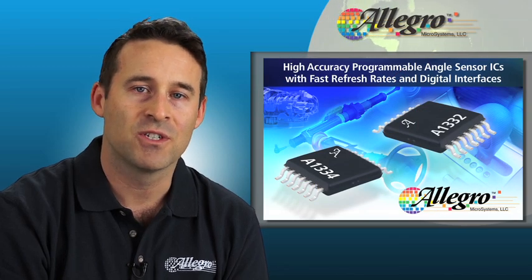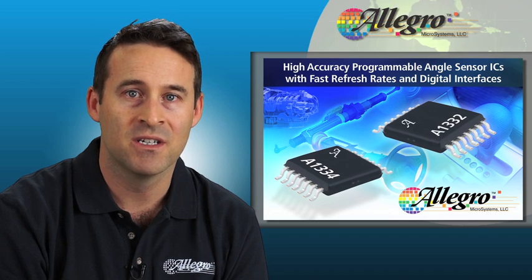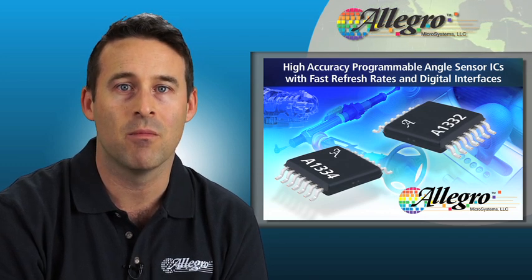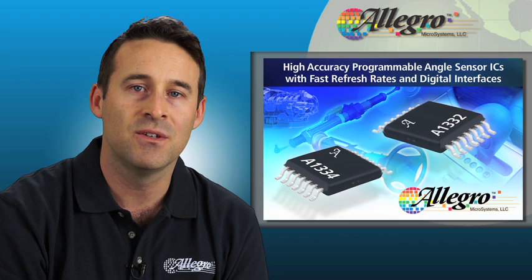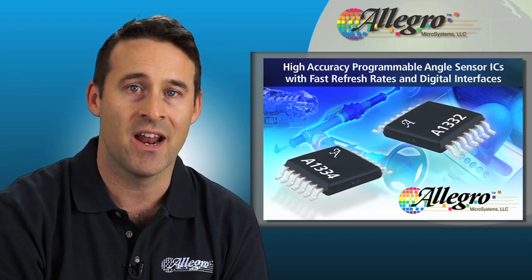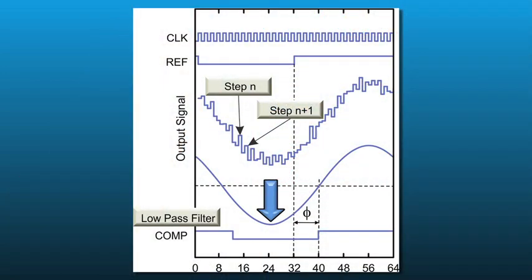CVH also offers higher immunity to parasitic fields and can support much higher target magnetic field levels, due to the fact that it measures phase and not amplitudes. Another key differentiator of CVH technology is that it compares the phase relationship between the external target magnet field and an internal reference signal.